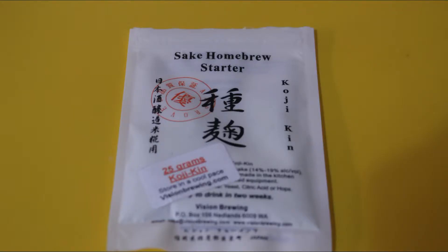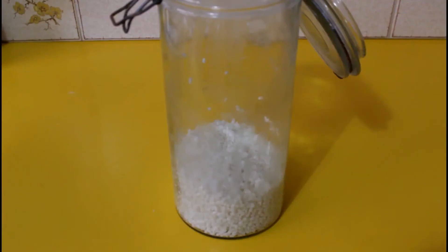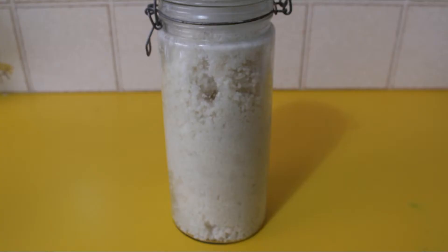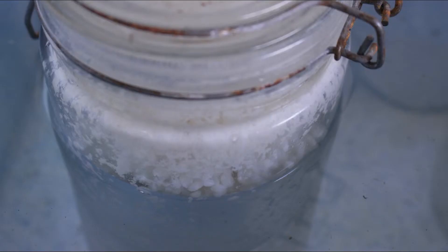Sprinkle one third of the koji spores that will be used over the rice. Mix it and repeat. Doing this twice more, you then place it in a cooler at 30 to 35 degrees centigrade for 24 hours.